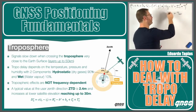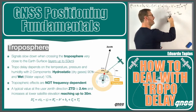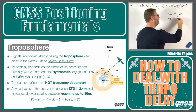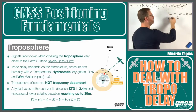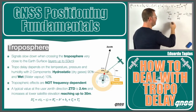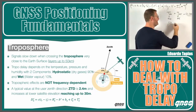In the troposphere, something like 90% of the delay will be hydrostatic or dry, and 10% will be wet. Usually what we do for the hydrostatic and wet part is to assume what we call a mapping function — that's a function of the elevation — multiplied by a ZTD, which is the zenith tropo delay.